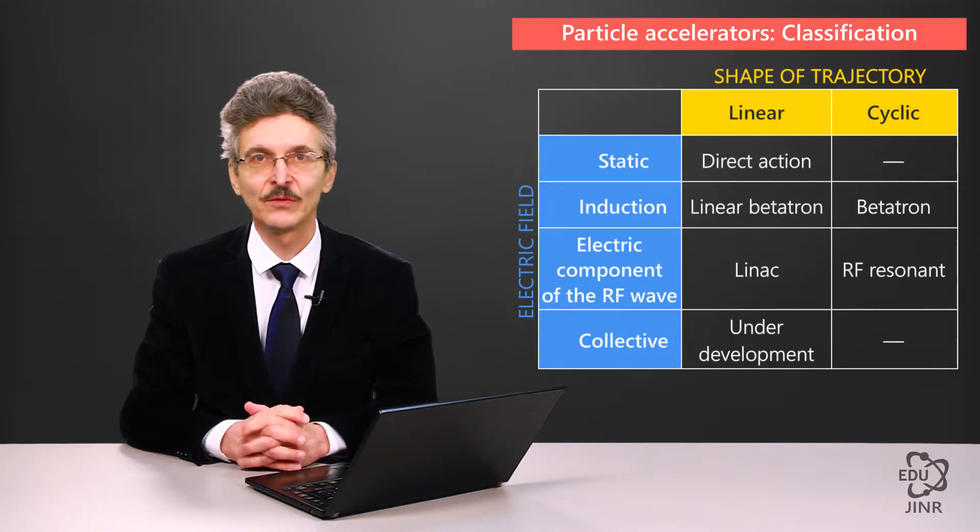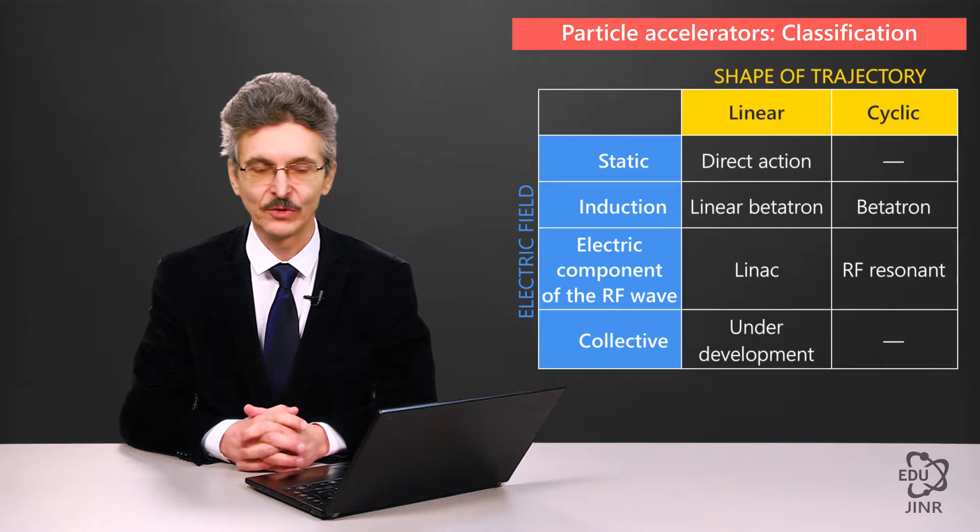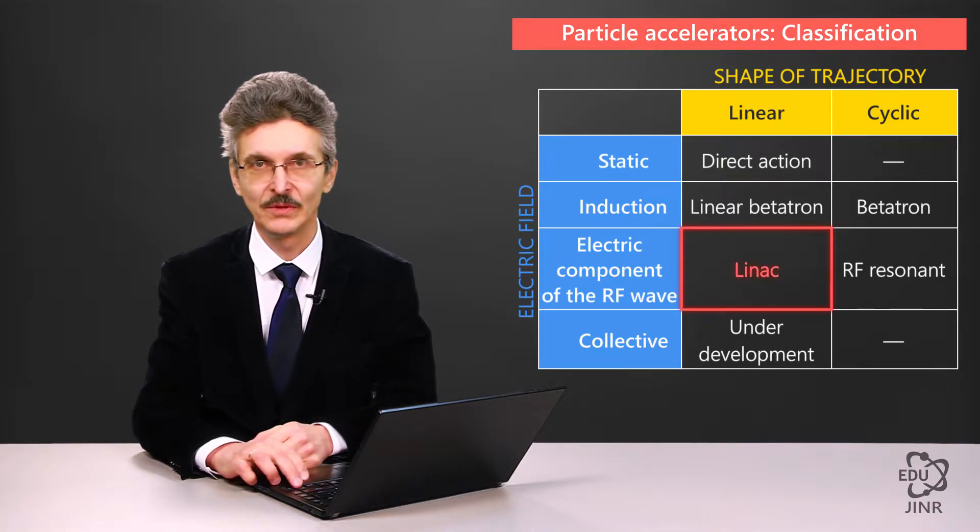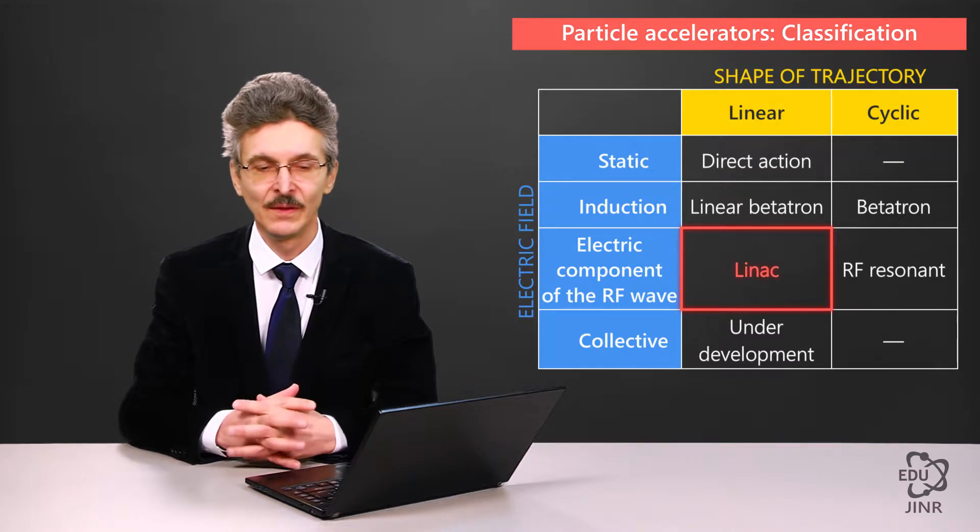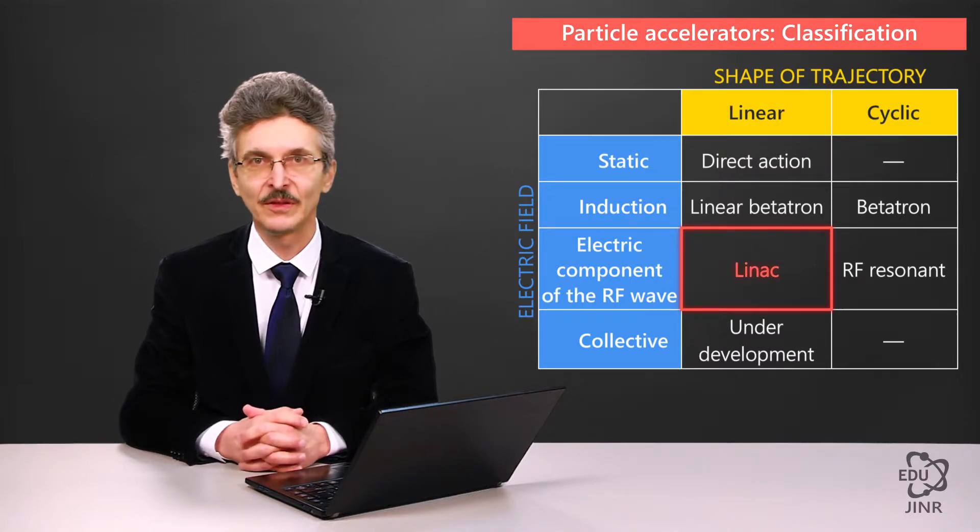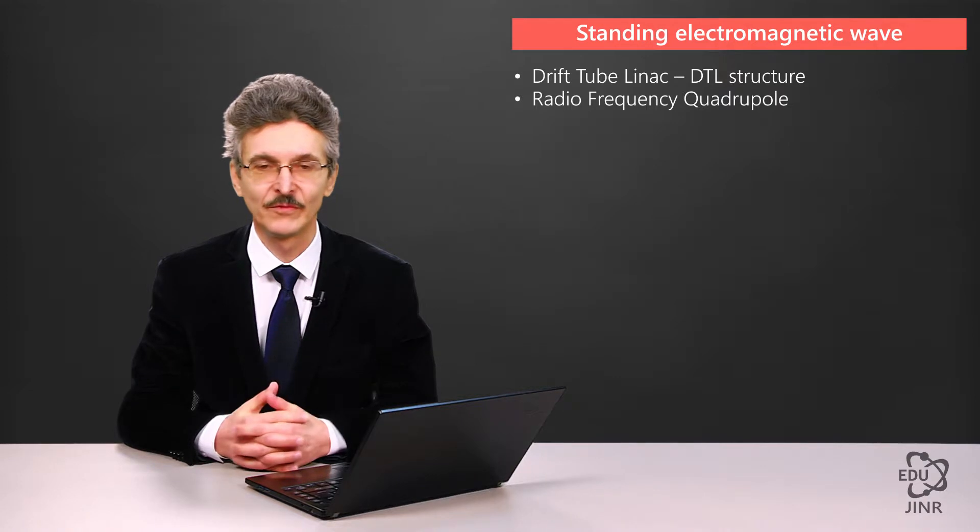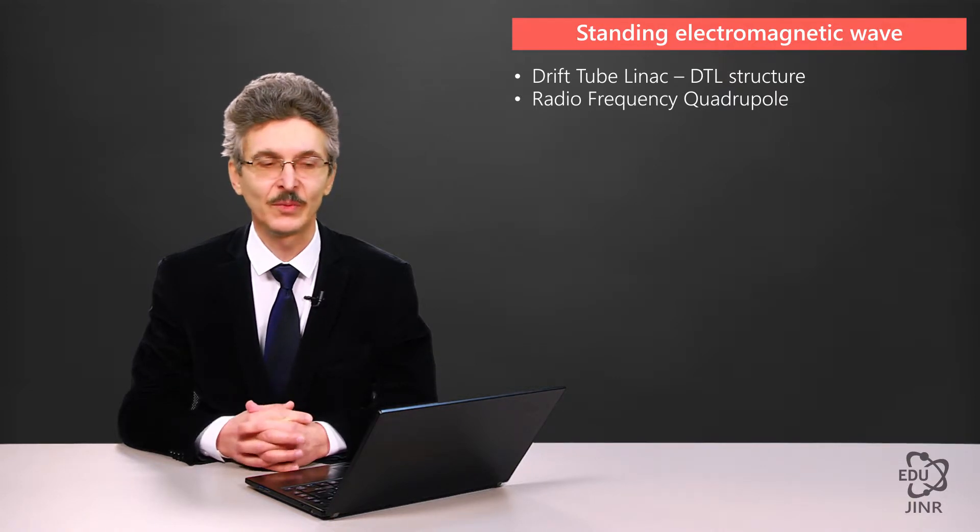The next type of accelerator is the Linear Resonant Accelerator or Radio Frequency Resonant Accelerators, and they have their own special branch. These are standing electromagnetic wave accelerators, which historically emerged first. The variety of standing electromagnetic wave accelerators is a structure with drift tubes or focusing the beam with radio frequency quadrupoles.